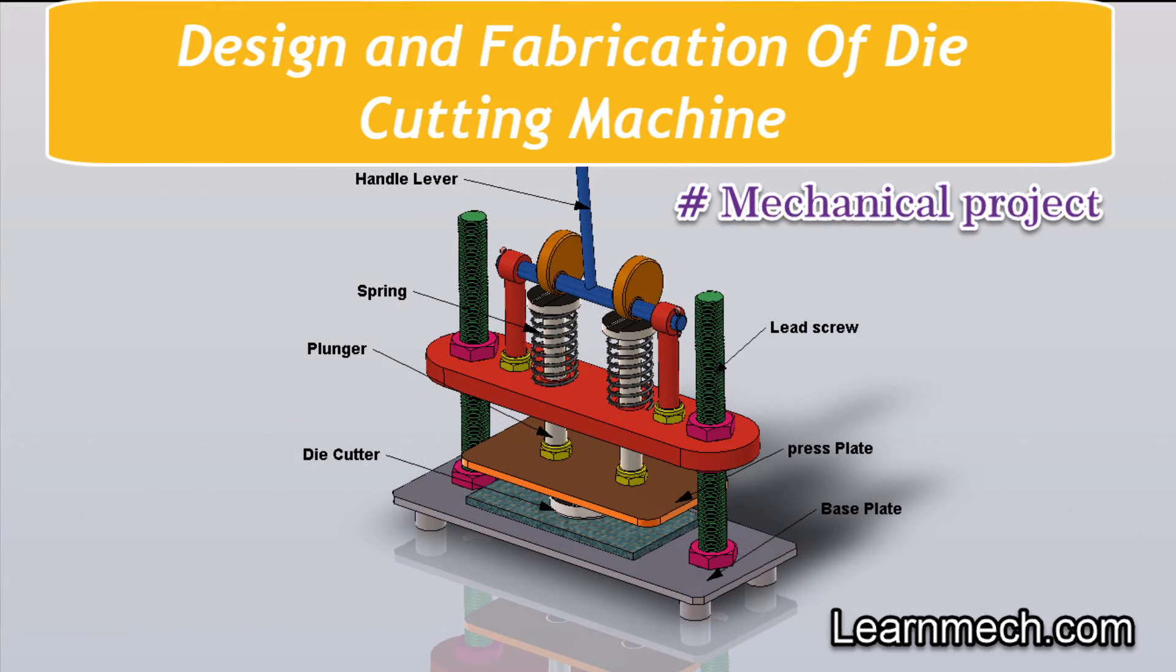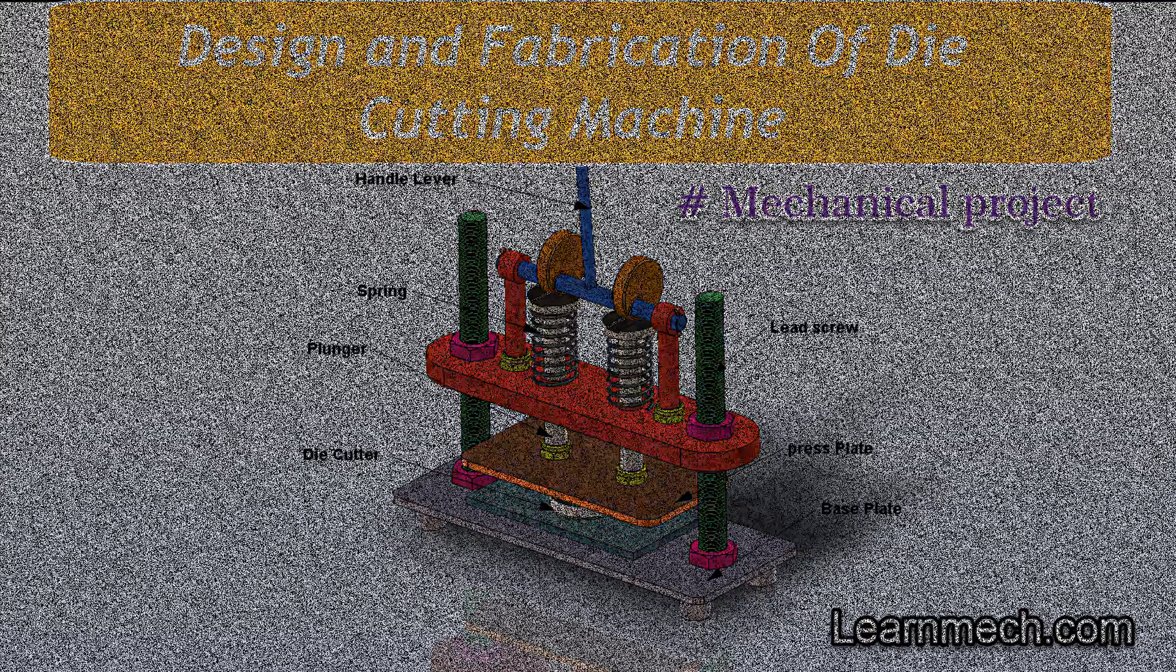Die cutting machines are machines that cut shapes out of paper, chipboard, fabric, and other materials. Die cutting is sometimes referred to as dinking or blanking.